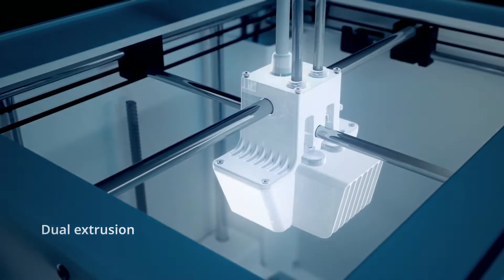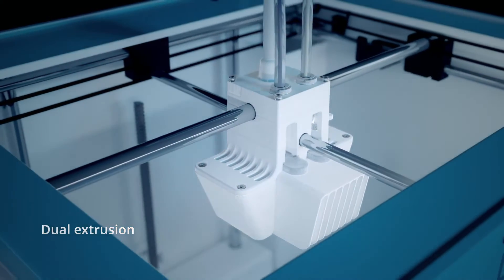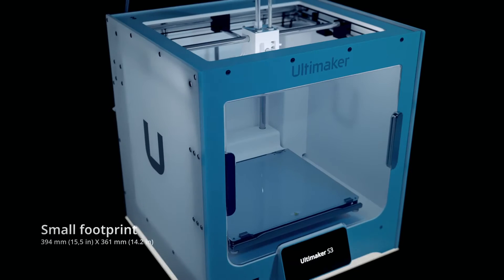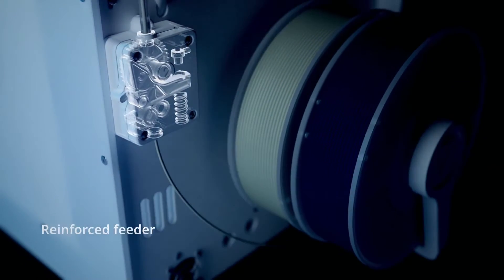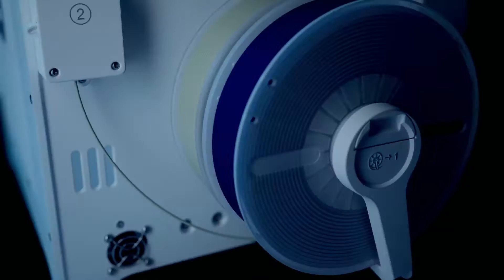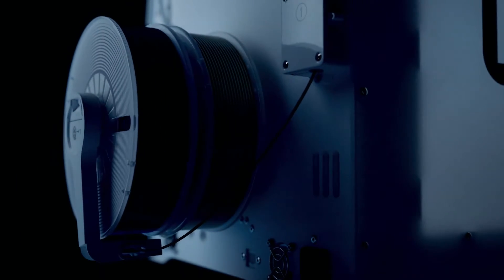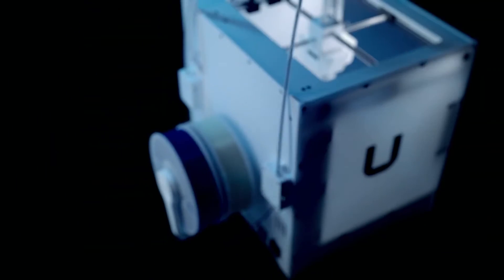A dual extrusion machine that delivers massive performance in an efficiently small footprint. Its reinforced feeder empowers you to create parts and models effortlessly with almost any filament, including glass and carbon fiber composites.